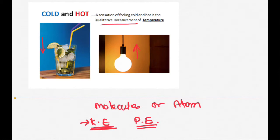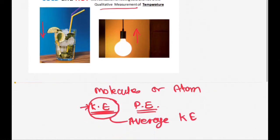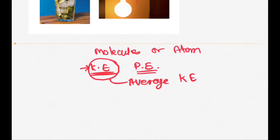The temperature of a substance depends on the average kinetic energy of these molecules or particles. If your kinetic energy is more, the temperature of the substance will be more. And if your kinetic energy is less, the temperature of the substance will be less. So the temperature of an object or substance is directly proportional to the average kinetic energy of its particles.